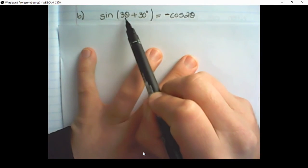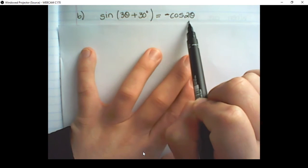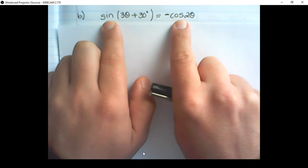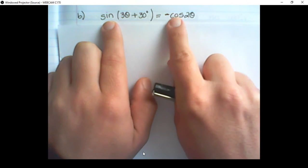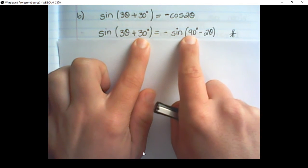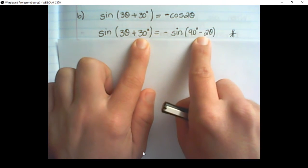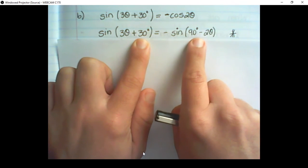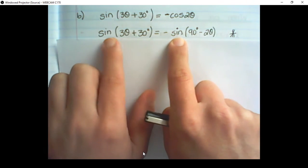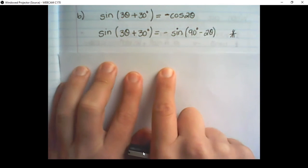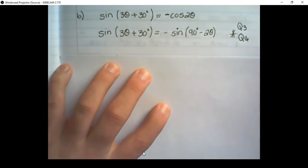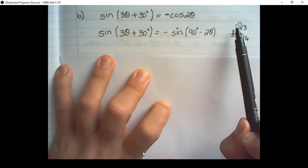In our next example, we have sin(3θ + 30°) equals negative cos 2θ. Again, we have two different trigonometric identities on the left and right, and we choose to change the one on the right. Using the co-function identity learned in grade 11, we write: sin(3θ + 30°) equals sin(90° − 2θ). Now that both sides have sin, we look at the negative sign, which indicates quadrant 3 and quadrant 4, because sin is negative in those quadrants.